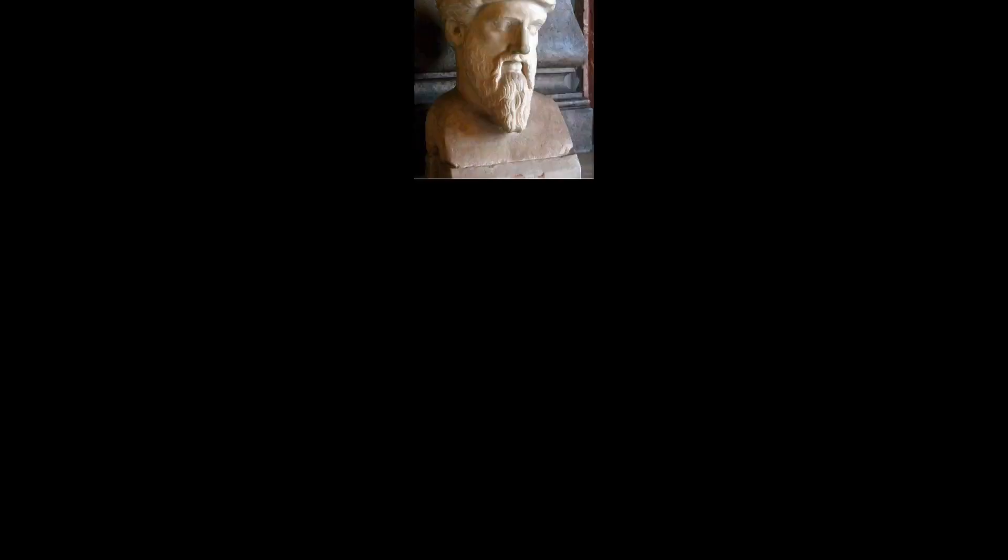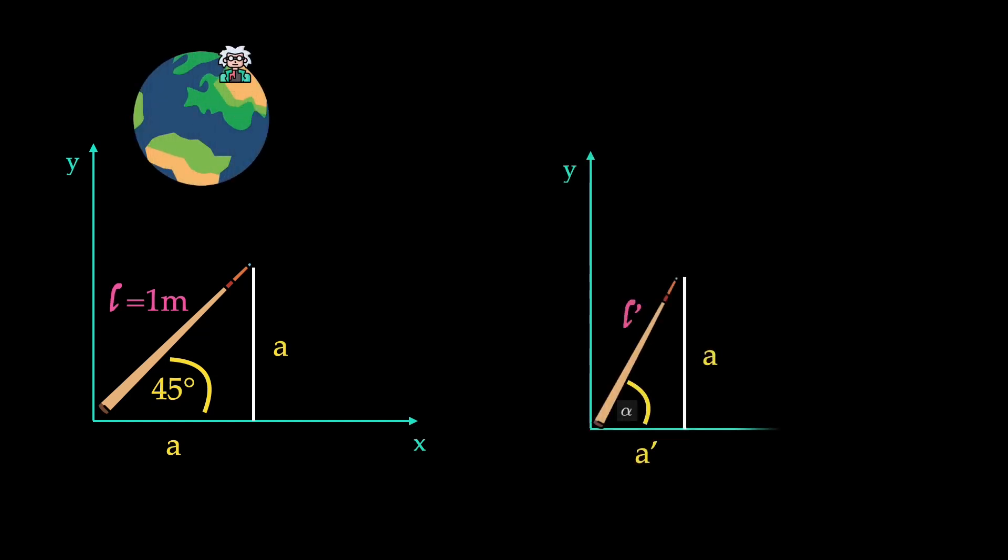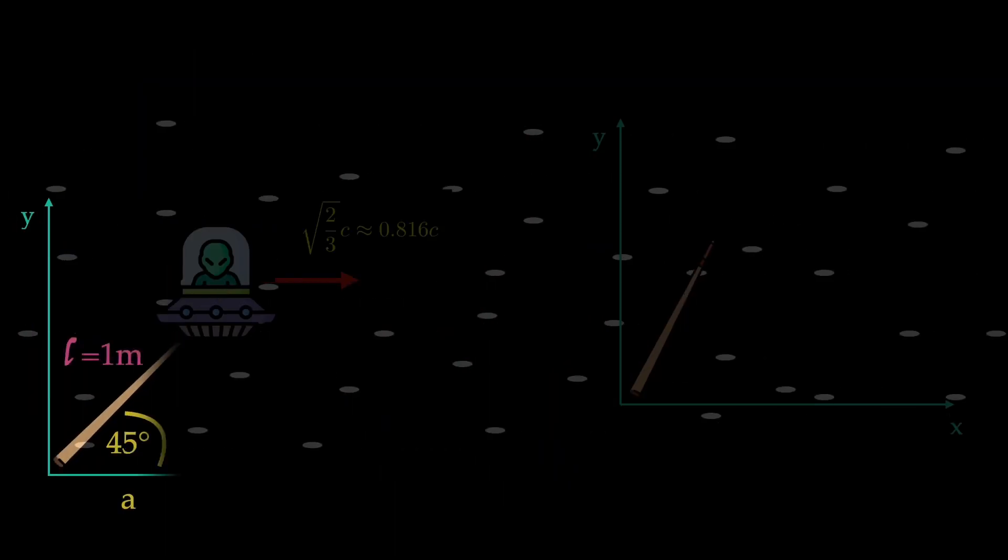Now we can turn to Pythagoras. For the resting observer we have a triangle with sides 1 meter and two equal sides with length a. For the moving alien there is length contraction in the x direction but no length contraction in the y direction because there is no movement in the y direction.